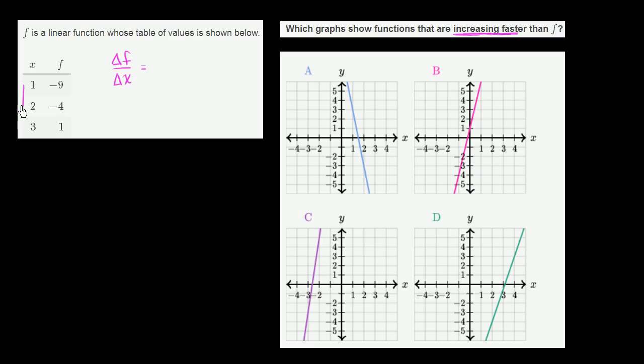We see when x changes by 1, the value of our function changes by positive 5. And it's linear, so that's true between any two points. The ratio between our change in f and our change in x is the same. If we go up 1 again, we have plus 1 in the x direction, and we are once again increasing by 5.